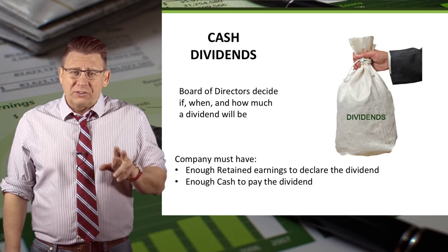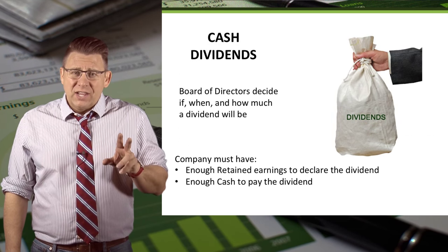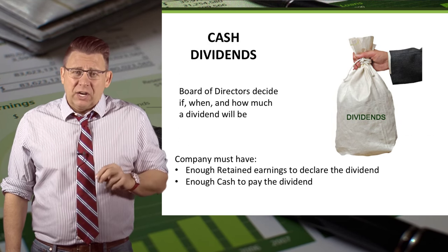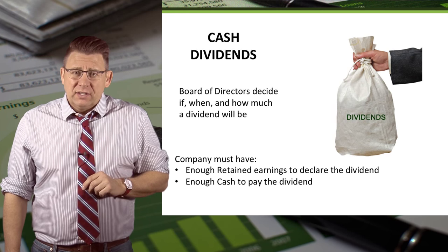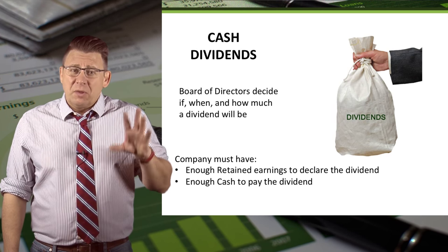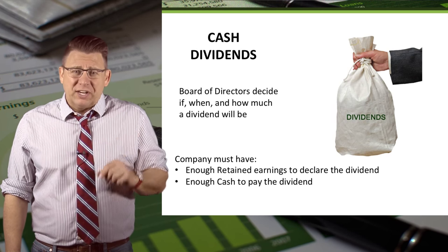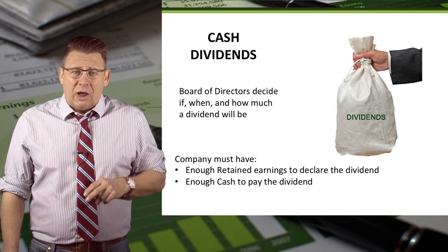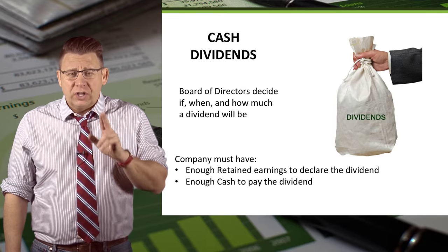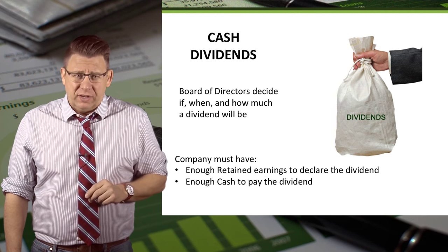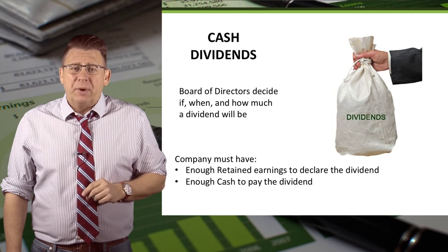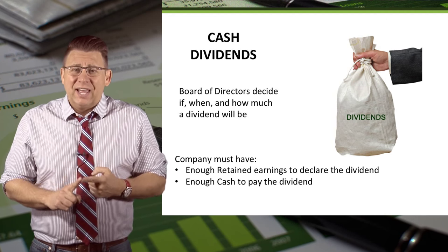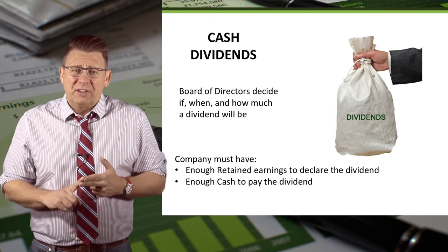The board of directors decides whether or not a company will declare a dividend, since they are the body representing the shareholders. However, in order to declare a cash dividend, a company must have enough retained earnings and enough cash.